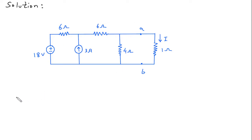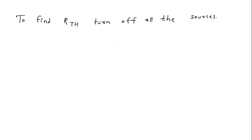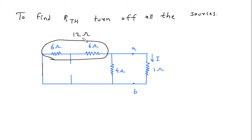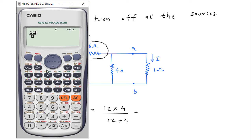Now to find Rth, turn off all the sources. The voltage source will be short circuited and the current source will be open circuited. Now as we can see that this 6 ohm and 6 ohm are in series, so this will be 2 ohm. Now 12 ohm parallel with 4 ohm, so this will be 12 into 4 by 12 plus 4, which equals 3.